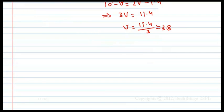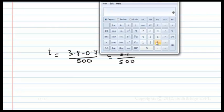What is the amount of current that is passing through the circuit? I is equal to 3.8 minus 0.7 by 500 was given. This is equal to 3.1 by 500. How much is 3.1 by 500? 3.1 by 500 is 6.2 milliampere.